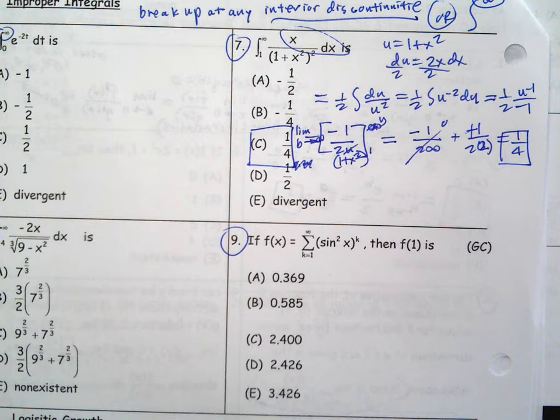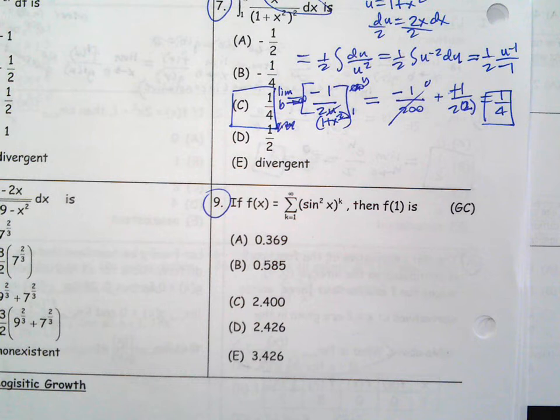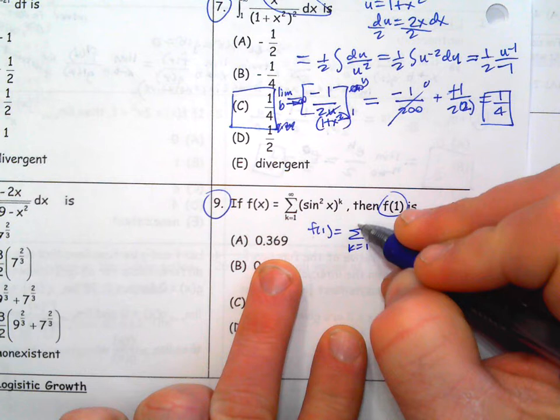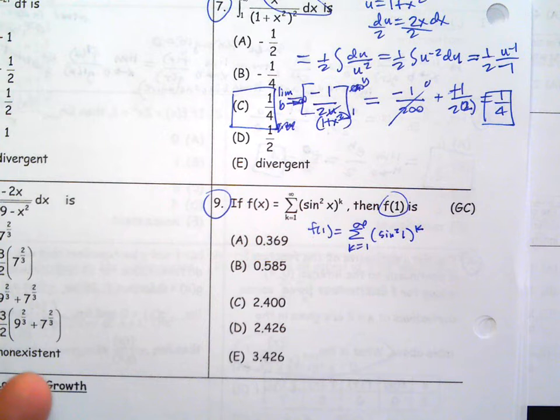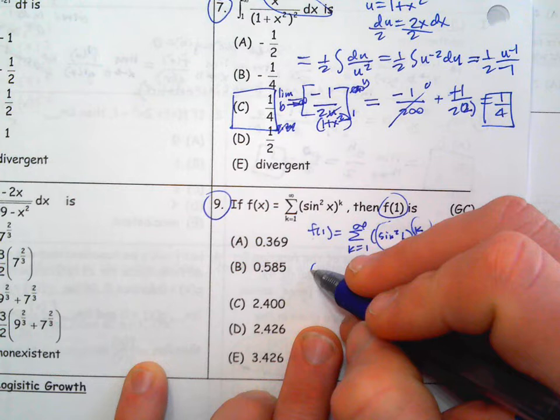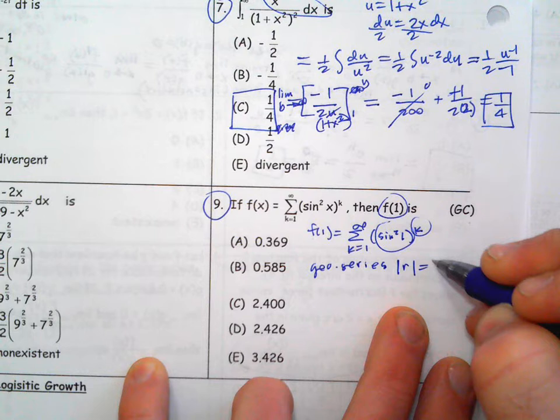Number 9 is a series question — it looks like a geometric series. It's a power series and we're going to use it for f(1). If you plug 1 in for x, you get sine squared of 1. This is a geometric series because it's just raising to a power — times itself, times itself. We've got to make sure it actually converges. The absolute value of r would be sine squared of 1, which is about 0.708, so this is less than 1 and it does converge.